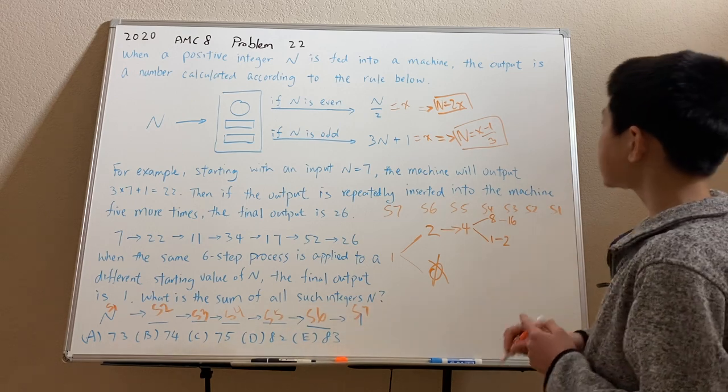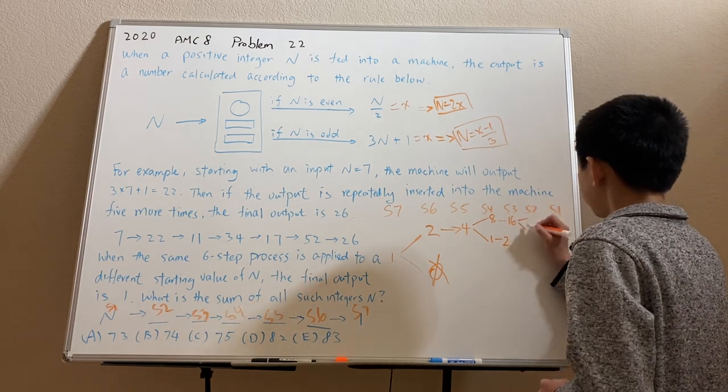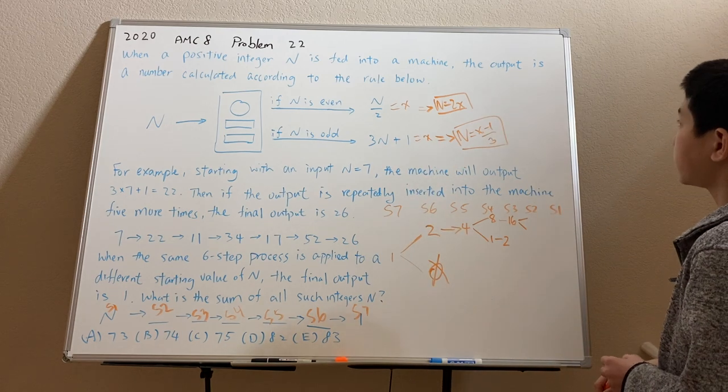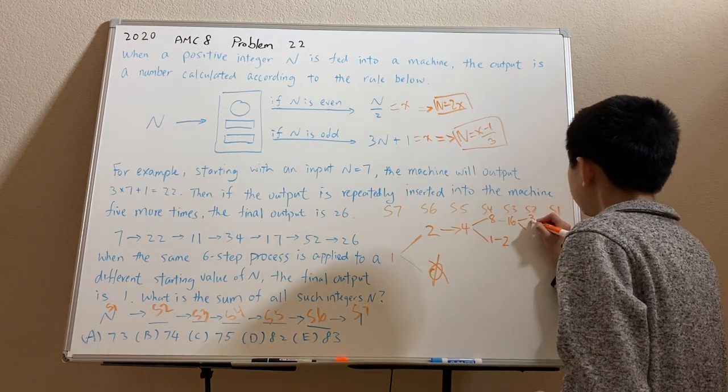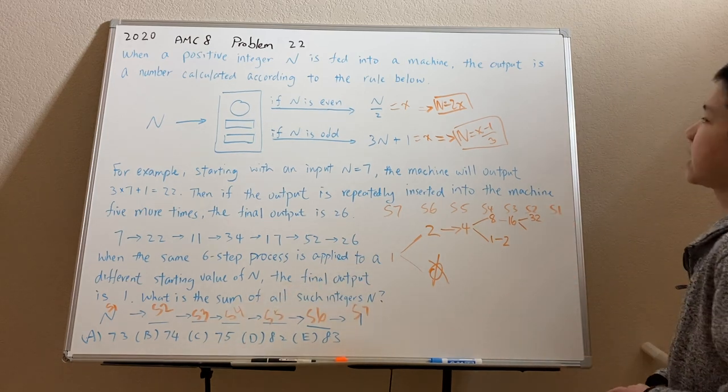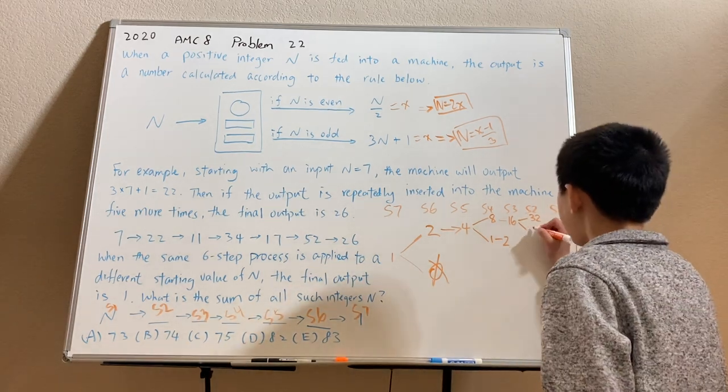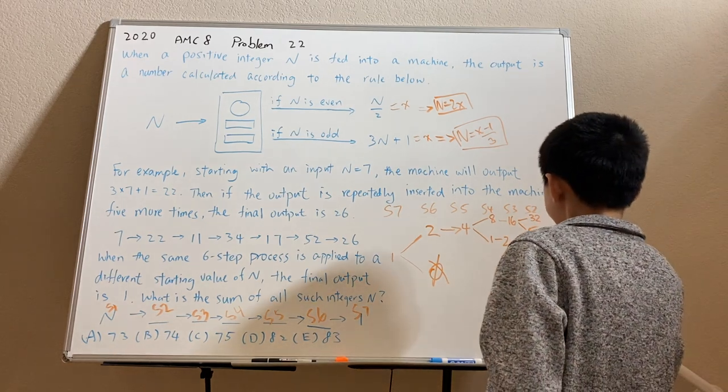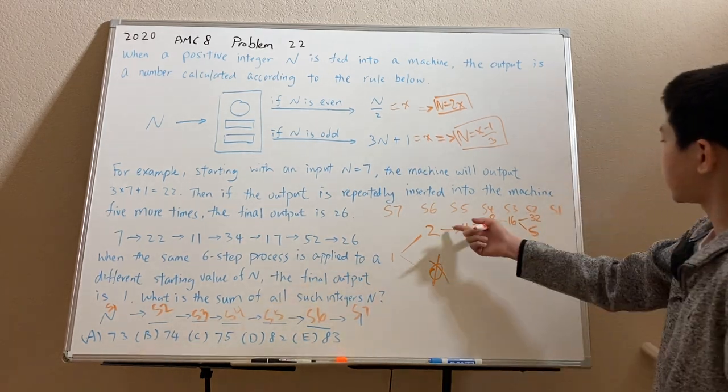Now we move to stage 2. So here, if we plug in x equals 16 to the n is even case, we get 32. And if we plug in x equals 16 to the n is odd case, we'll get n is 5. And then for the 2 case, it has to be 4.